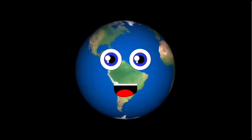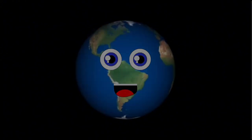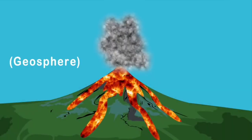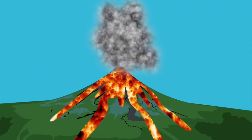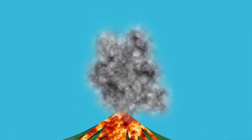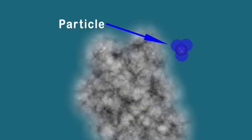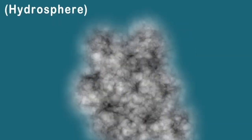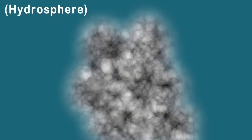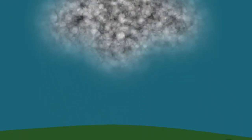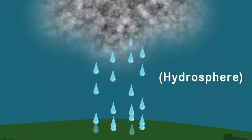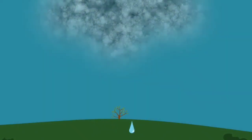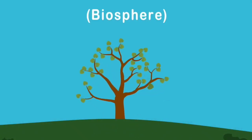Here's one of many examples of how these spheres interact — there are so many different ways they help us live and that's a fact. When volcanoes erupt from the geosphere, it releases particles and ash into the atmosphere. These particles act as the nuclei to help form water drops — that's the hydrosphere at work, and it never stops.